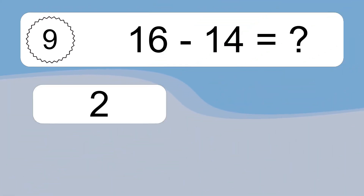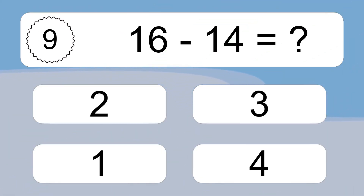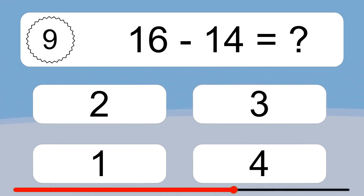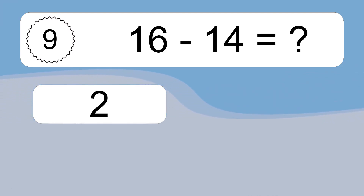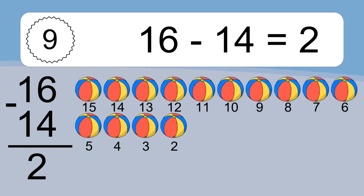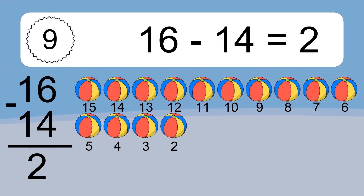16 minus 14 equals what? 16 minus 14 equals 2. Let's count it. 15, 14, 13, 12, 11, 10, 9, 8, 7, 6, 5, 4, 3, 2.